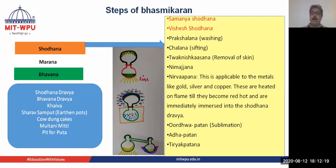As already mentioned, we need: Shodhana Dravya, Bhavana Dravya, Khalava which is mortar and pestle, Saravsampur which are earthen pots, cow dung cakes, Multani Mitti, and a pit for Puta.